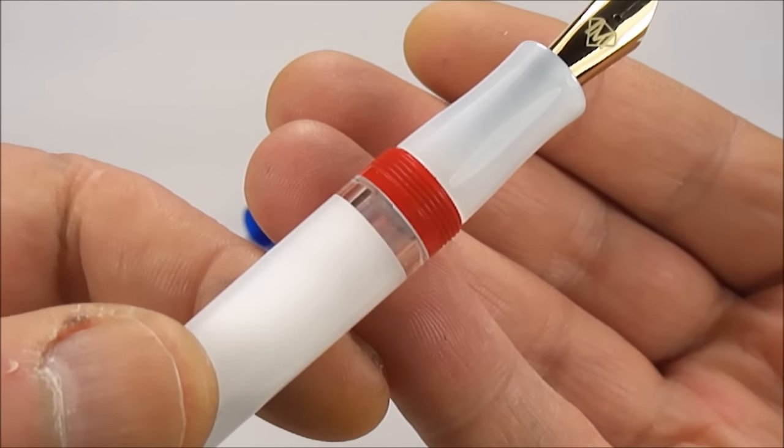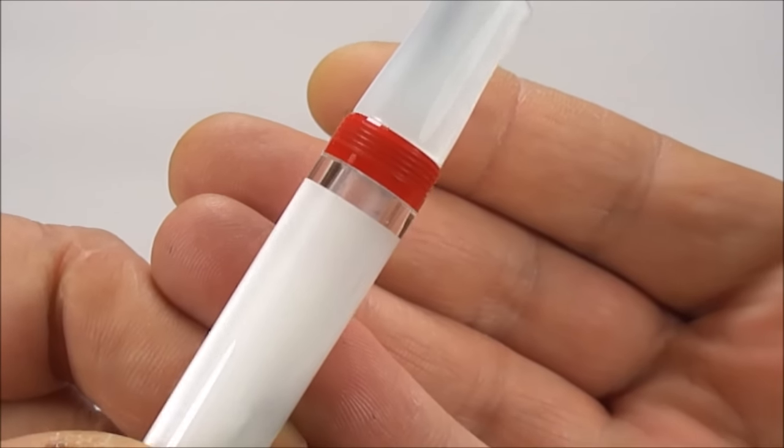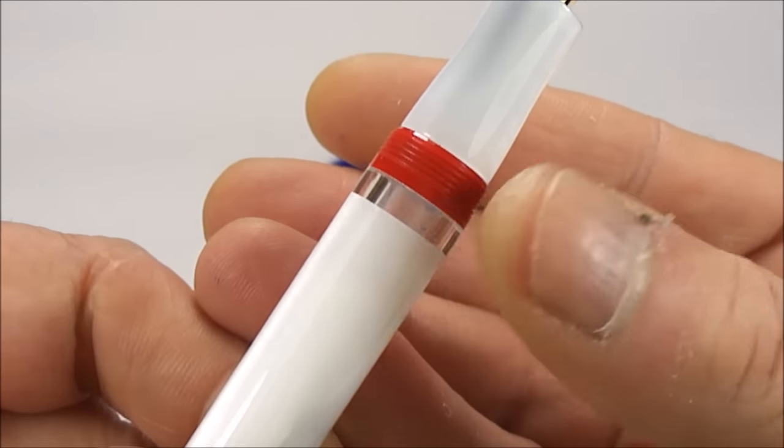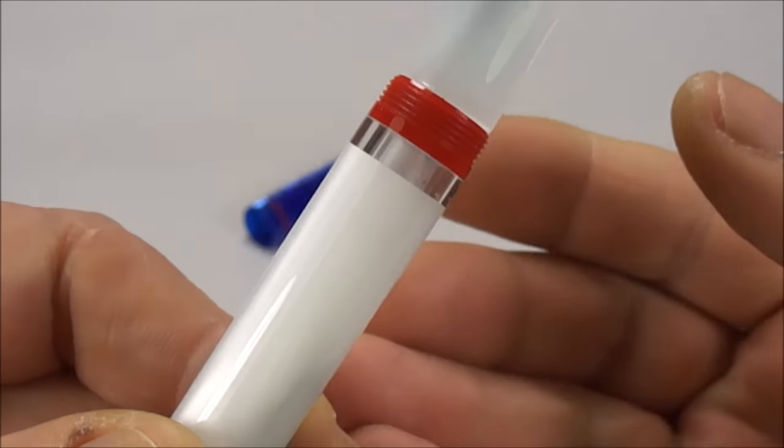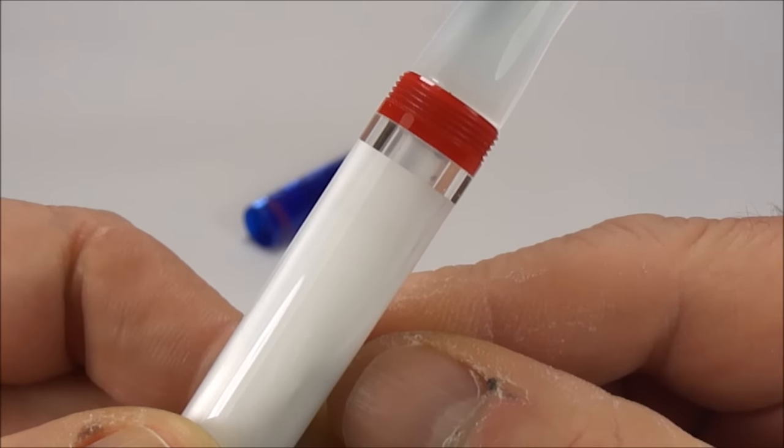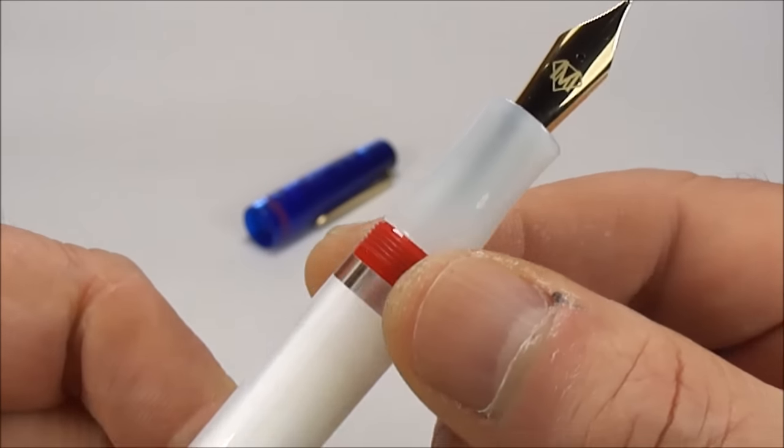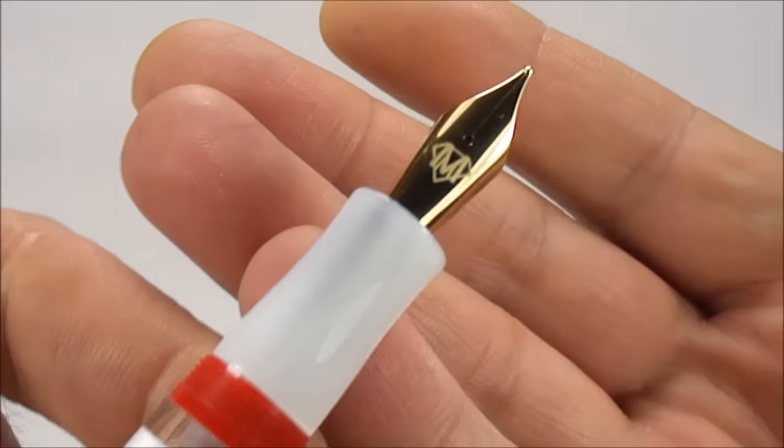You can see the red section there is where the cap actually screws on, it's the thread. And then a lovely touch which is quite reminiscent to a lot of my vintage pens, you can see it's got this ink view window just below the thread there so you can see when you're running out of ink or when you're filling the pen up.